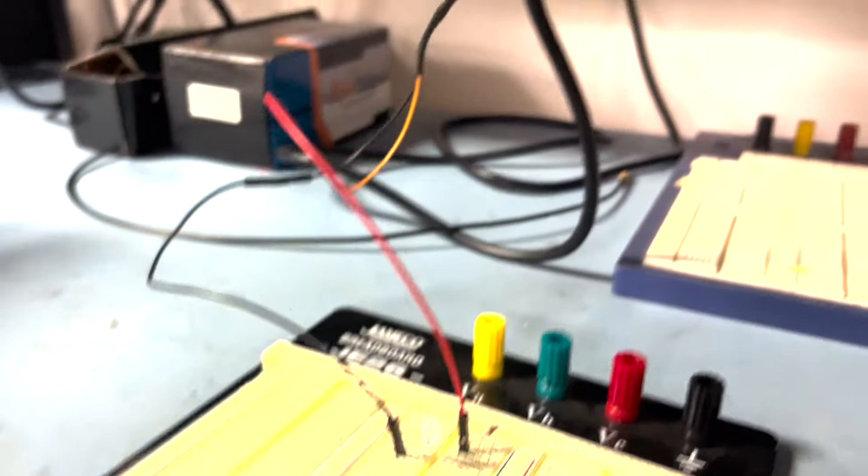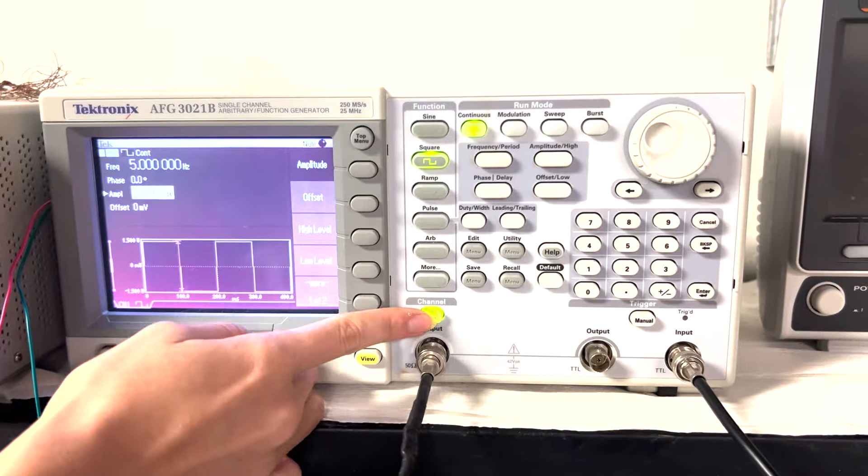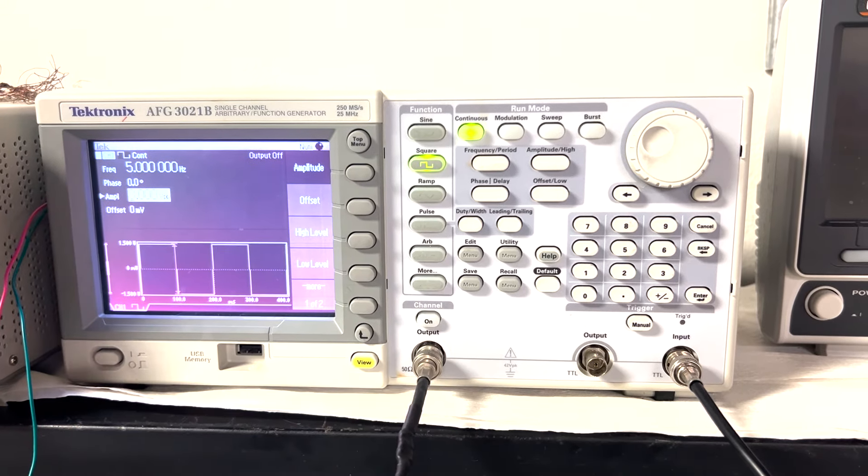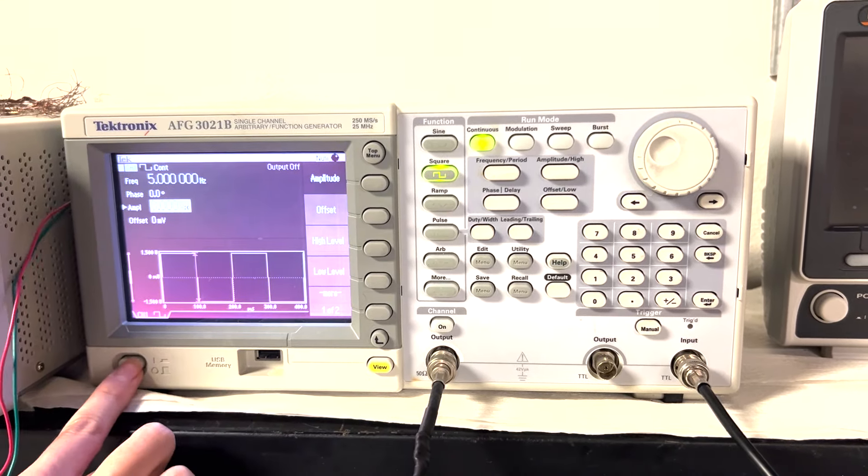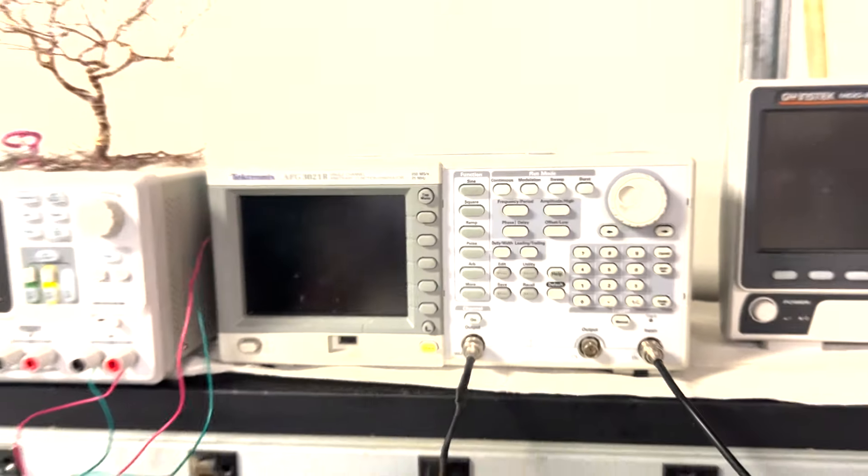And after you've done everything you want with the function generator, you can turn it off by clicking the same button you turn the channel on and then turning the function generator off with this button. And that is how you have an input signal for your circuit.